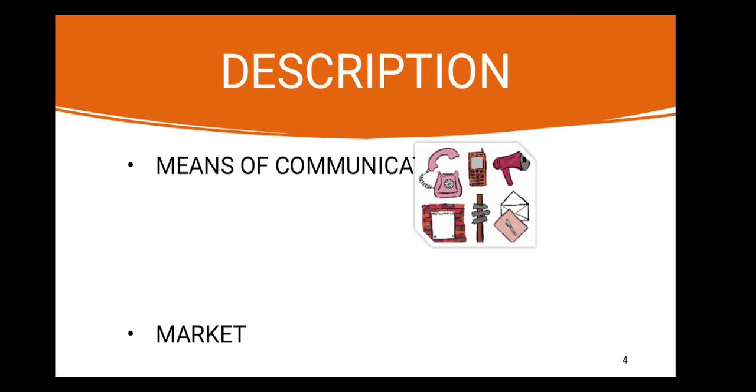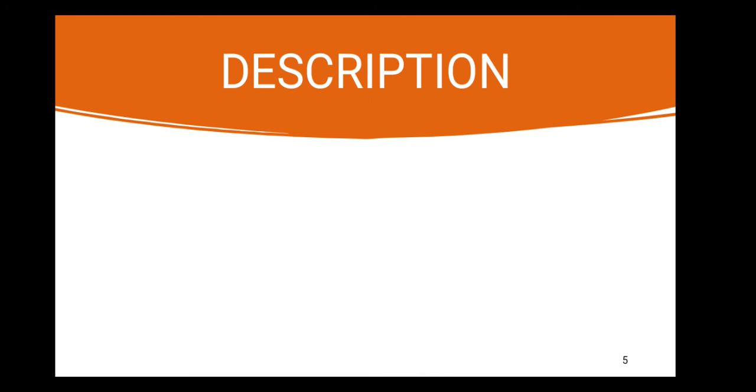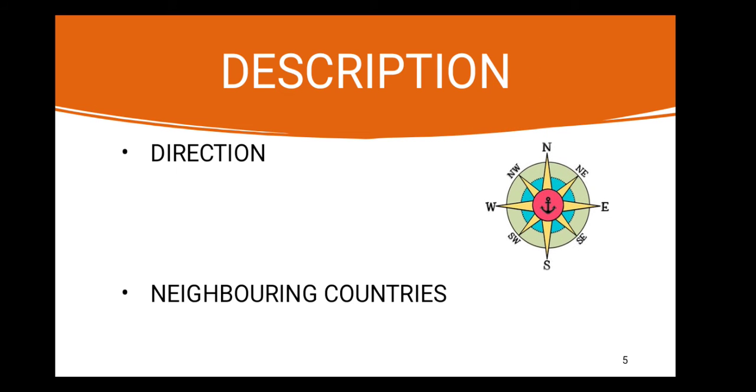The next chapter is markets. What are markets? Markets are places where we get things. Our next chapter is directions. What are directions?